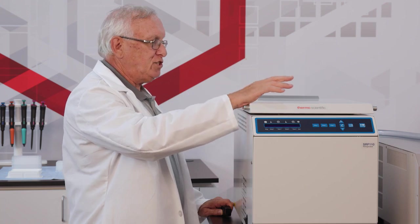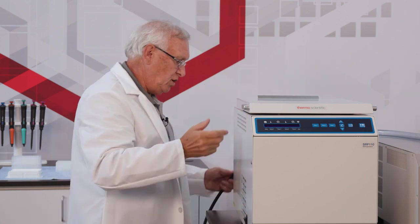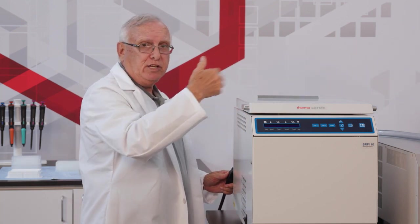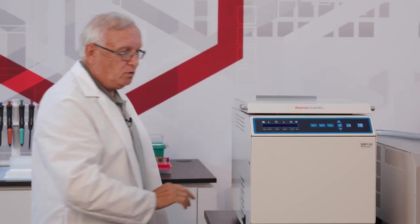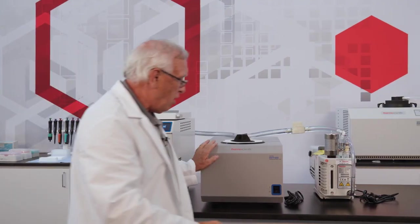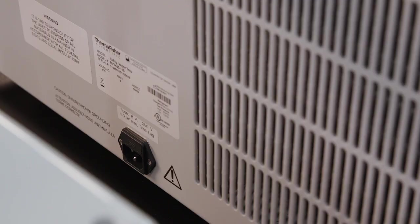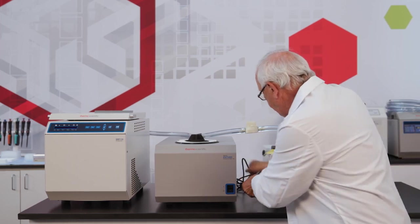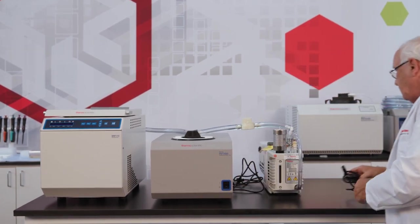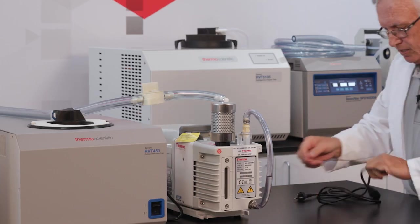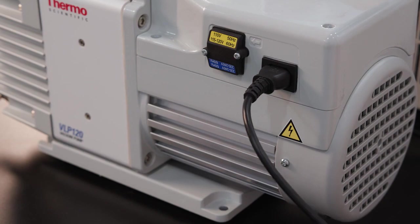Now that we've finished the installation of all the vacuum lines, we now can finally plug in the equipment and turn it on. There really is no order to plugging in the equipment. The mains line goes in the back on the SRF 110 right here. We then move to the RVT 450 and we're going to plug that in. That mains line plug-in is right on the side of the unit. The mains plug-in line on the VLP is on the right side of the box as well.